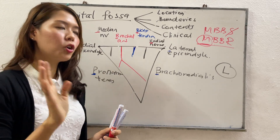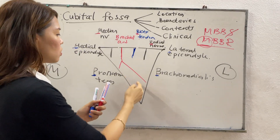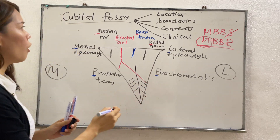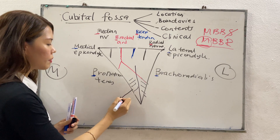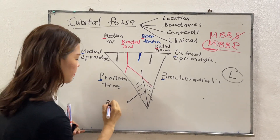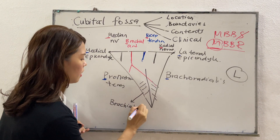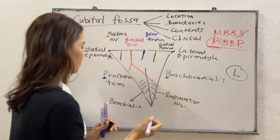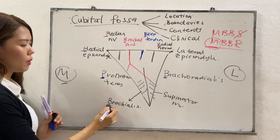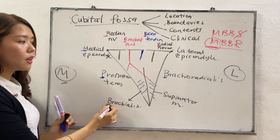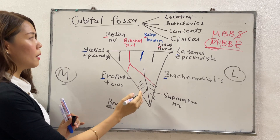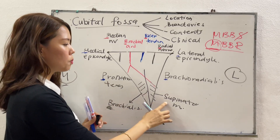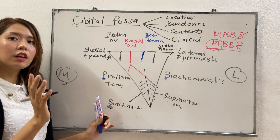Next, I would like to talk about the floor. The floor has two parts: the medial floor and the lateral floor of the cubital fossa. Medially, it is formed by the brachialis muscle, and laterally it is formed by the supinator muscle. So brachialis forms the medial floor and supinator forms the lateral part of the floor of the cubital fossa.